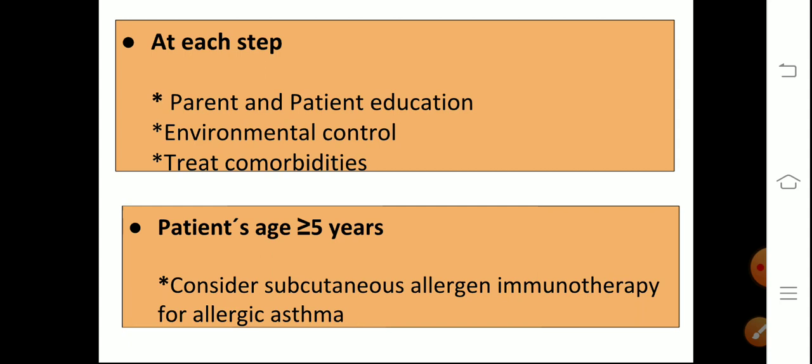At each step, remember to do parent and patient education, teach about controlling environmental exposures, and treat comorbidities. In patients more than five years, consider subcutaneous allergen immunotherapy for allergic asthma.